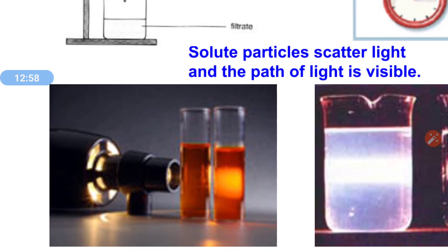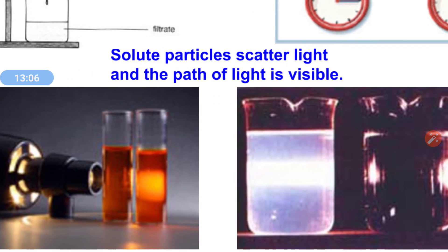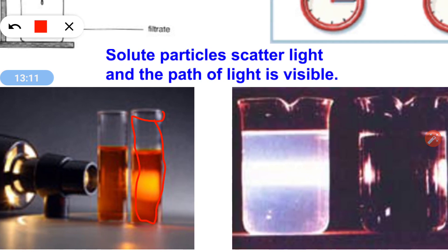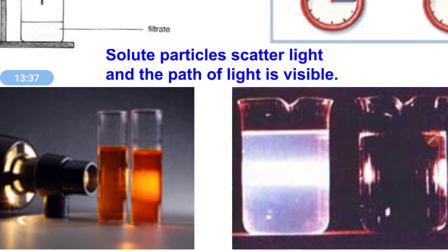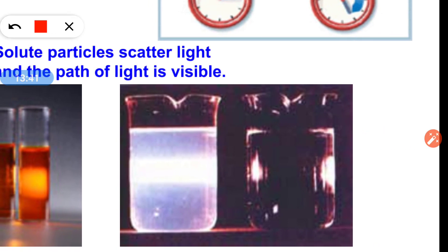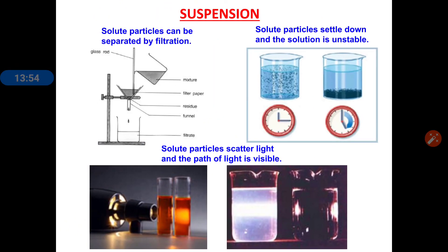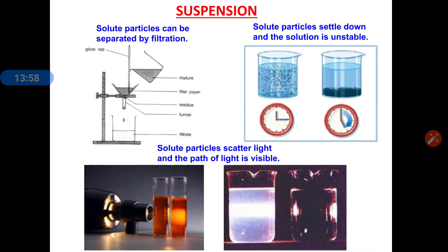Now see the next picture. If you take a suspension in a test tube and try to pass a beam of light through it, you will see that the beam of light is scattering. The suspension can scatter the beam of light. In the same way, in a beaker with suspension also, the beam of light is scattering. Suspension has the property of scattering the beam of light. Through these diagrams, you can easily understand the properties of suspension.